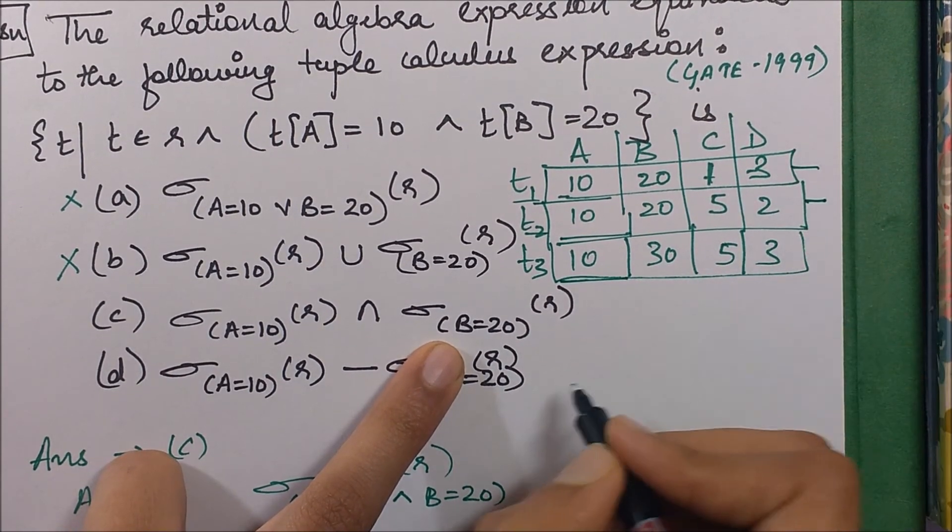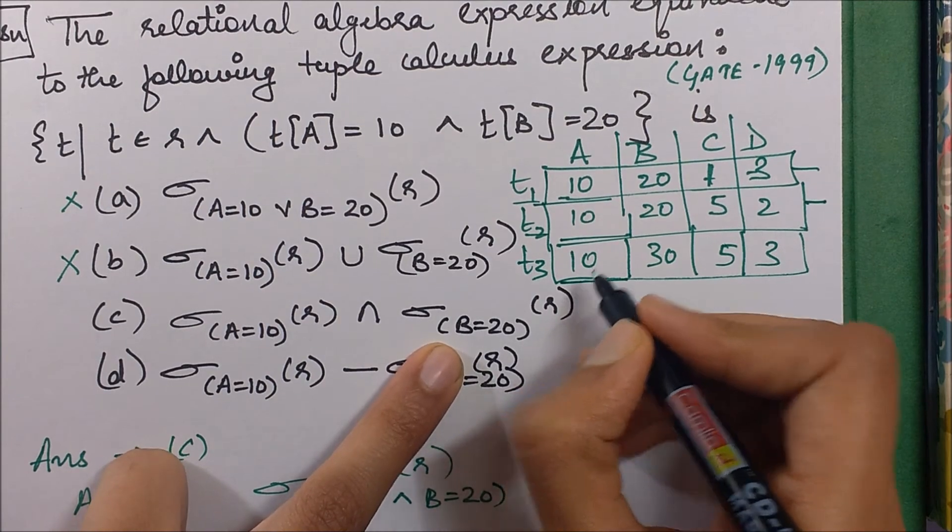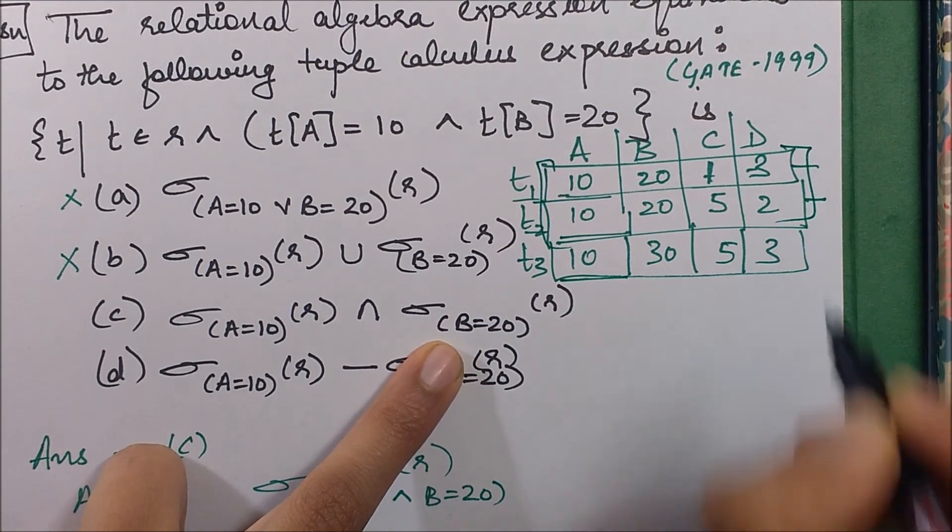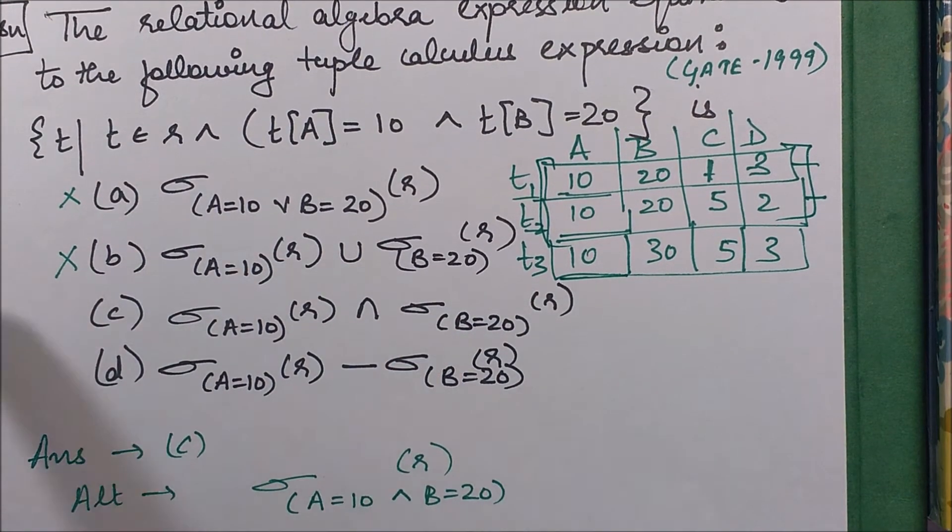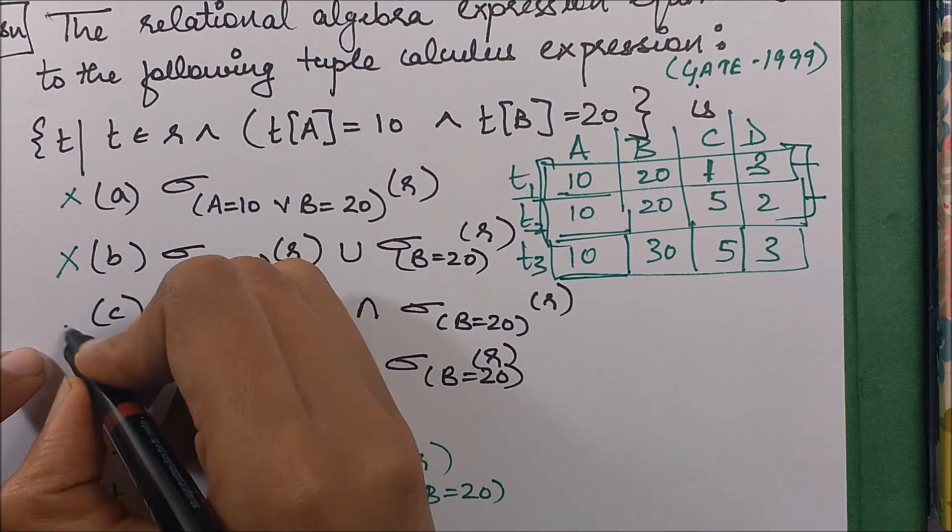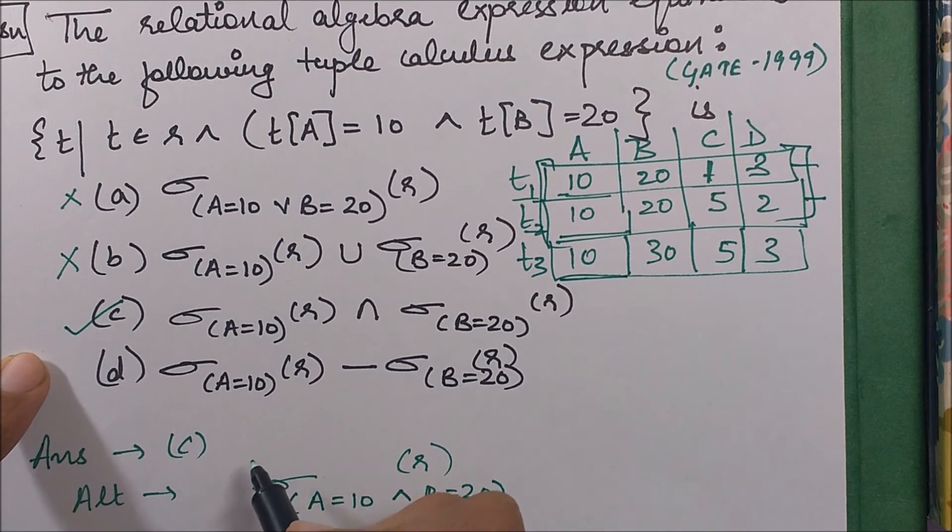The intersection of both of them will give us these two rows. So this is a possible answer. I'll just tick mark it, and I'll check for the next option as well.